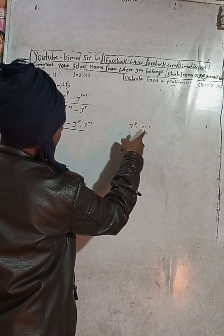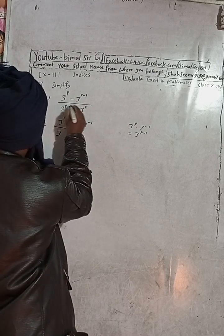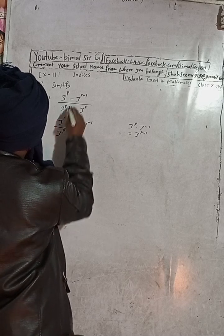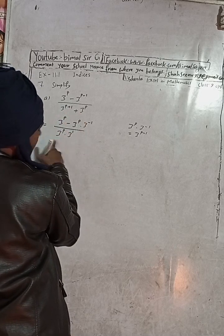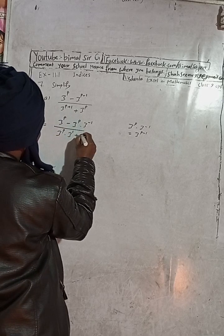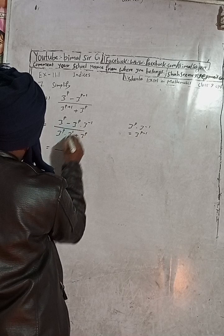Because when this is same, that power is added. Now here this is 3 to the power P plus 1, can be written as 3 to the power P into 3 to the power 1. Okay? When you again add this, you get here 3 to the power P plus 1 plus 3 to the power P.